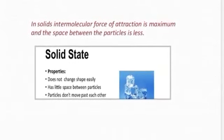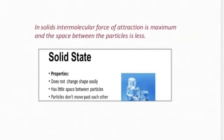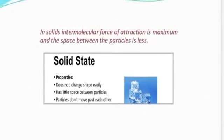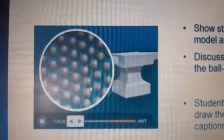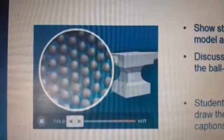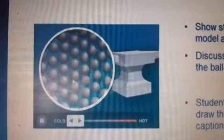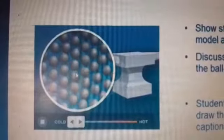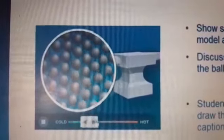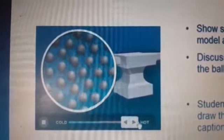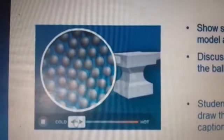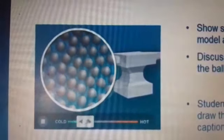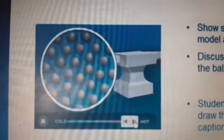In solids, the intermolecular force of attraction is maximum and the space between the particles is very, very less. Here you can see the microscopic picture of the particles of solid. The particles move and vibrate, but within their main position — they do not leave their main position. If we raise the temperature, the particles start vibrating more vigorously, but they will still not leave their main position. Therefore, solids have fixed shape and volume.